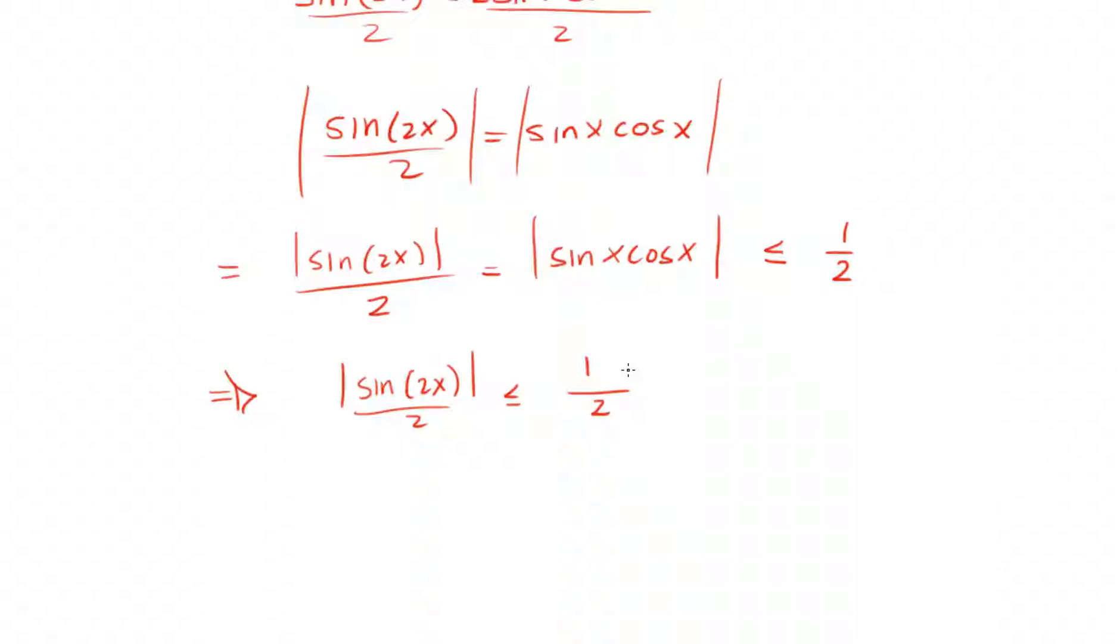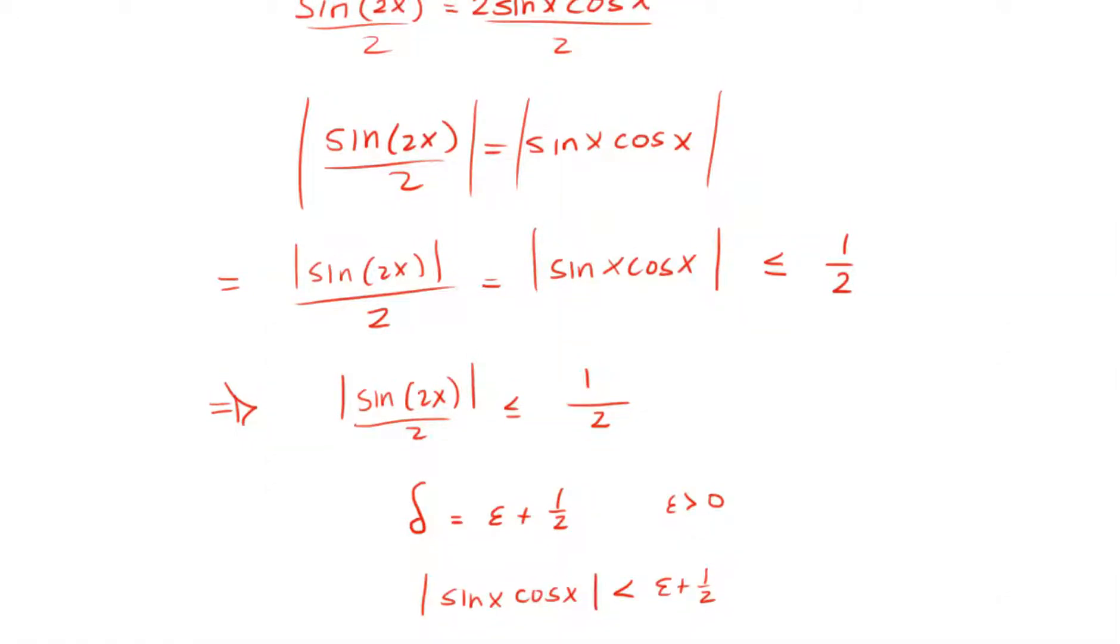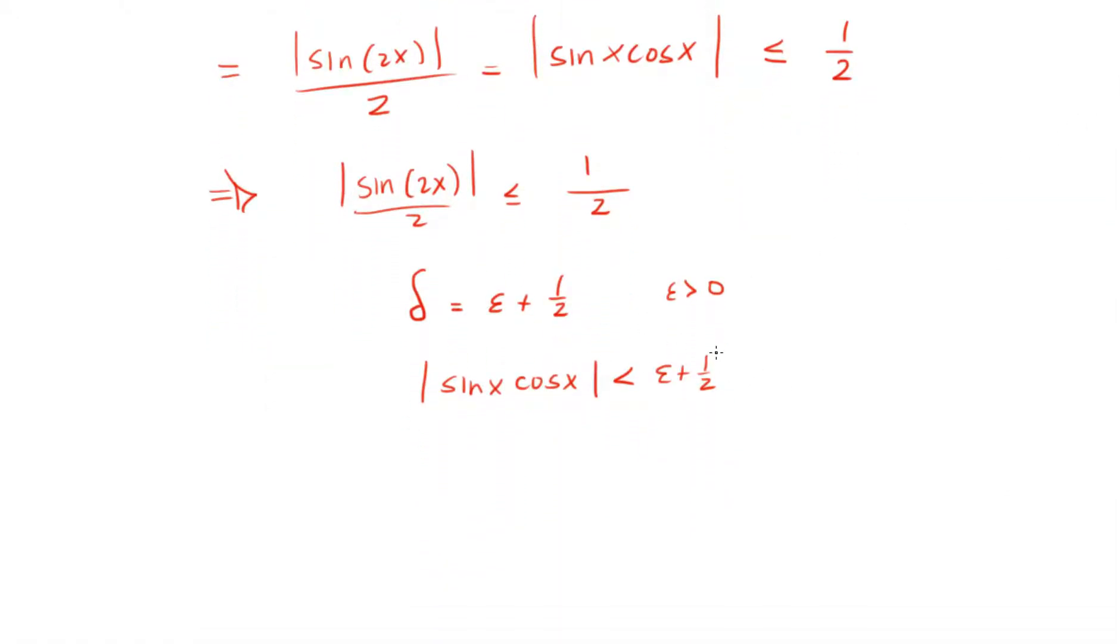What will be a delta that would satisfy this inequality? We choose delta to be equal to epsilon plus 1 half. Since epsilon is greater than 0, we will always have that the absolute value of sine of x cosine of x is going to be less than epsilon plus 1 half, and that will be sufficient.